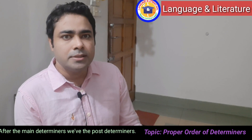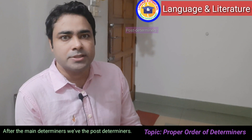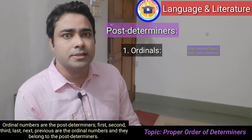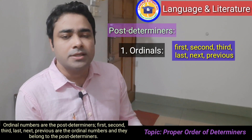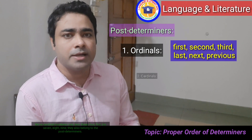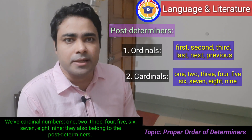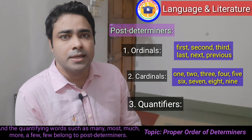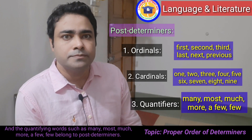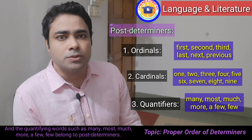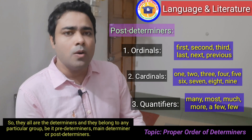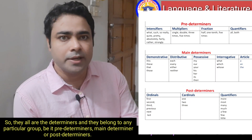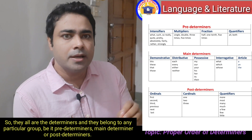After the main determiners we have the post determiners. Ordinal numbers are post determiners: first, second, third, last, next, previous. Cardinal numbers — one, two, three, four, five, six, seven, eight, nine — also belong to post determiners. Quantifying words such as many, most, much, more, a few, few also belong to the post determiners.